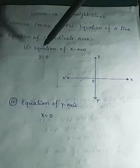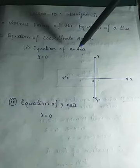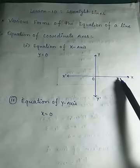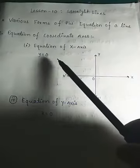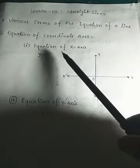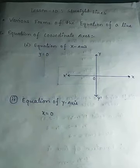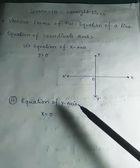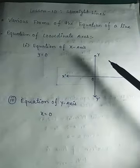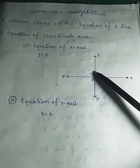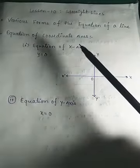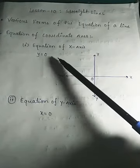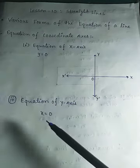First is the equation of the x-axis. On the x-axis, the y-coordinate is 0. So the equation of the x-axis is y equal to 0. Similarly, on the y-axis, the x-coordinate is 0, so the equation of the y-axis is x equal to 0.